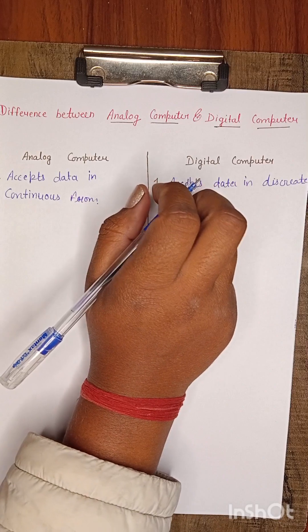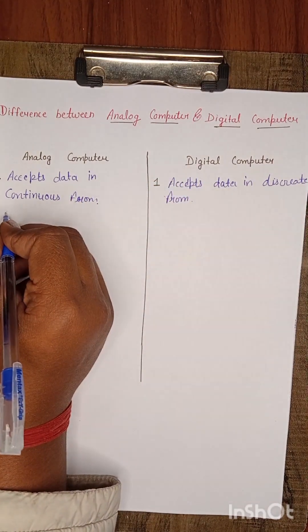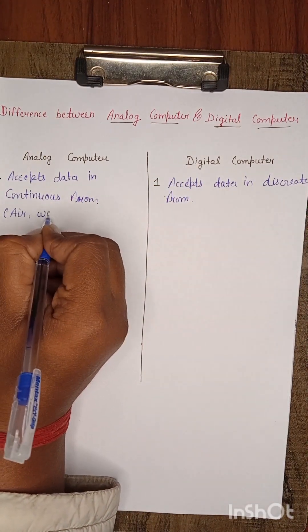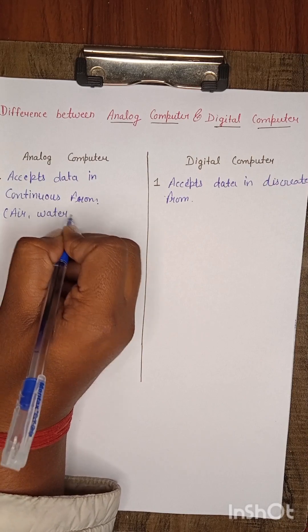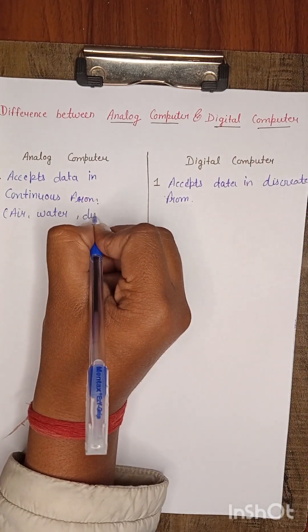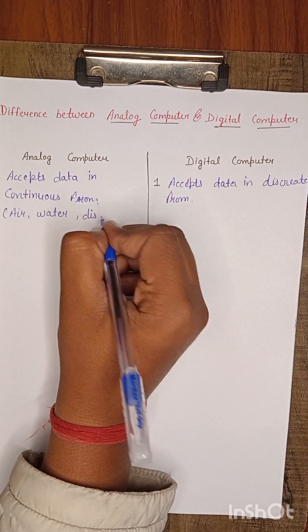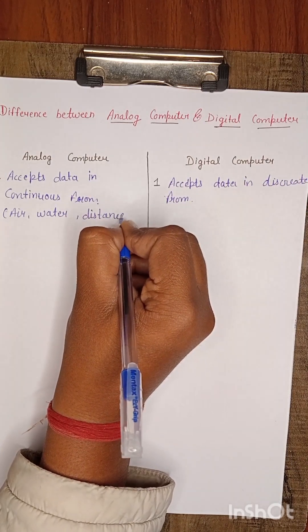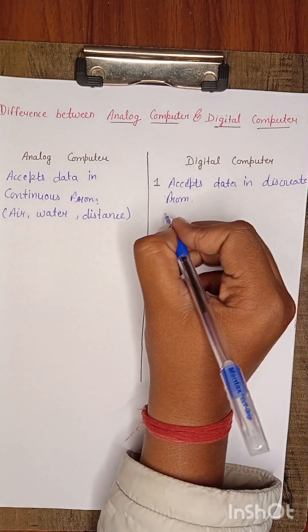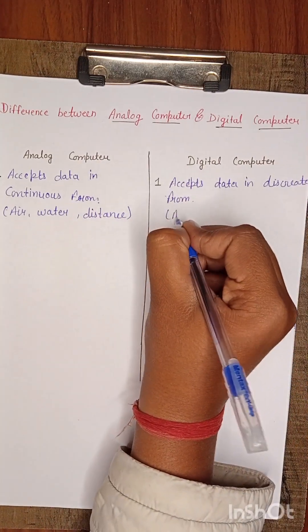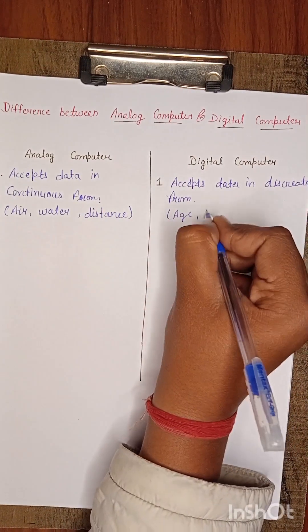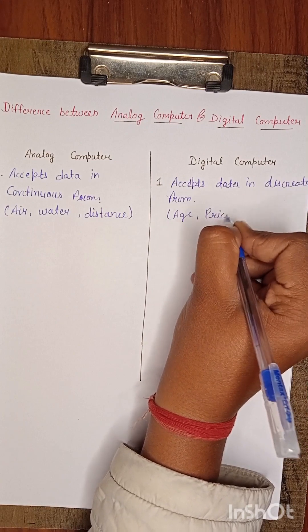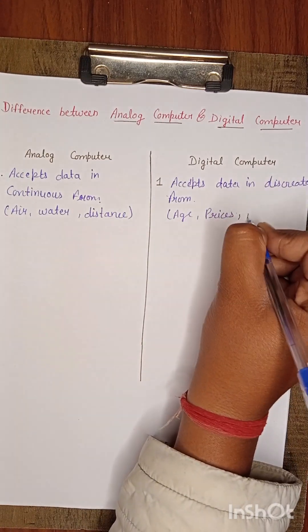What is continuous form? Air, water, distance. And this data comes from age, prices and incomes.